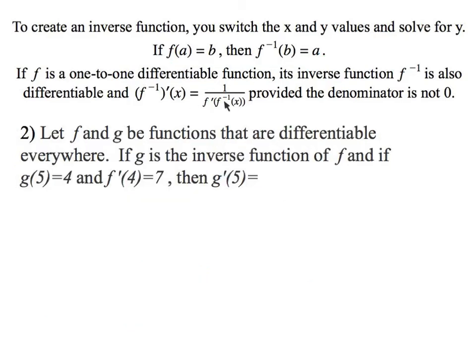Here's our formula again. This is the key formula. Let f and g be functions that are differentiable everywhere. g is the inverse function of f. And if g(5) = 4 and f'(4) = 7, then the derivative of g at 5 is what? Well, let's not freak out too much. We don't even have functions here, but if we go to this formula again, let's look at that formula.